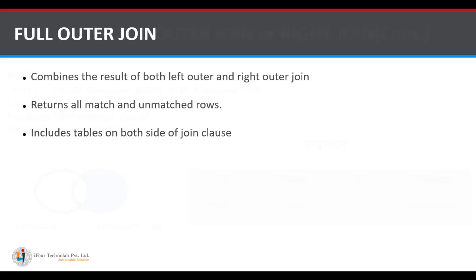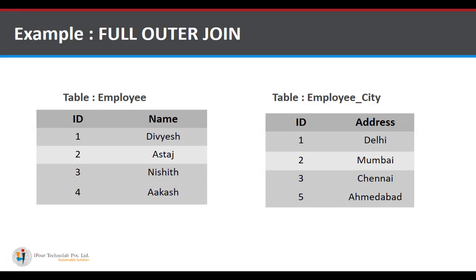The next is full outer join. A full outer join combines the result of both left outer and right outer joins. It returns all matched and unmatched rows from tables on both sides of the join clause. Using the same employee and employee_city tables, the query is: SELECT * FROM employee FULL OUTER JOIN employee_city ON employee.id = employee_city.id.